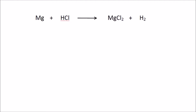So back to the equation — we can represent this reaction in symbols. Magnesium is Mg, hydrochloric acid is HCl, producing magnesium chloride and hydrogen gas. But this equation is unbalanced.